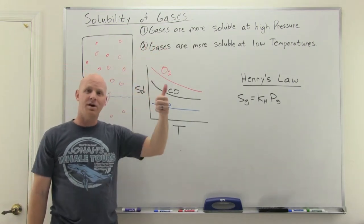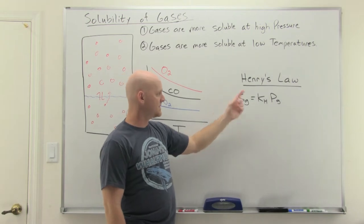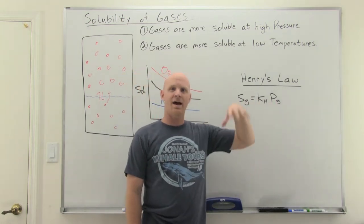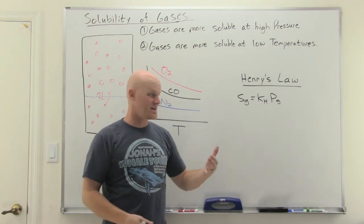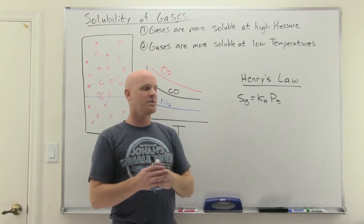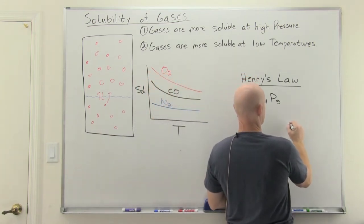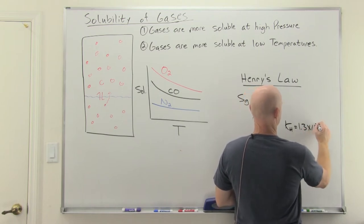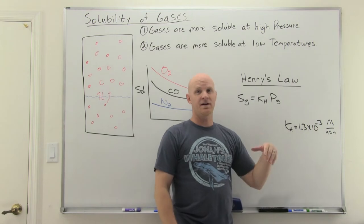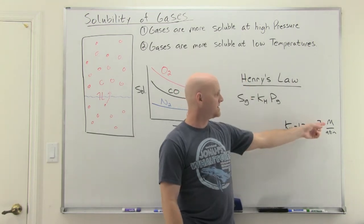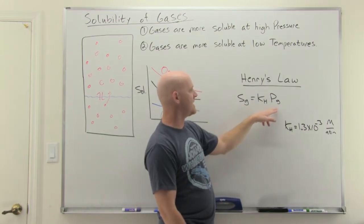This behavior is quantified by Henry's Law: the solubility of a gas equals the Henry's Law constant (k_H) times the partial pressure of that gas above the solution. Henry's Law constants are specific to each solute-solvent pair and are temperature-dependent. For example, for O₂ in water at 25°C, k_H = 1.3 × 10⁻³ M/atm. At sea level, the partial pressure of O₂ is about 0.21 atm, giving a solubility of approximately 2.73 × 10⁻⁴ M.